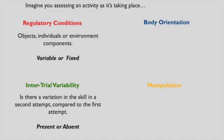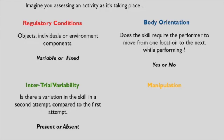The third thing we need to consider is body orientation. Body orientation has us ask the question: does the skill require the performer to move from one location to the next while they're performing? We can simply answer with a yes or a no. The thing to keep in mind here is that moving from one location to the next means you have to physically go somewhere. It doesn't mean that your body can remain stable while other parts of your body are moving. You would physically have to move somewhere for this to be a yes response.